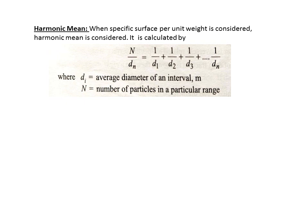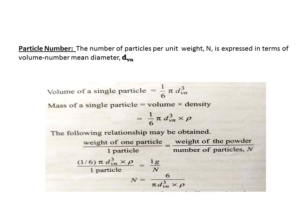Harmonic mean is used when specific surface per unit weight is considered, and its equation is to be noted. Particle number refers to the number of particles per unit weight in a given weight of sample, expressed using the volume number mean diameter, denoted d with subscript vn. This mathematical derivation assumes the given particles are spherical in shape.